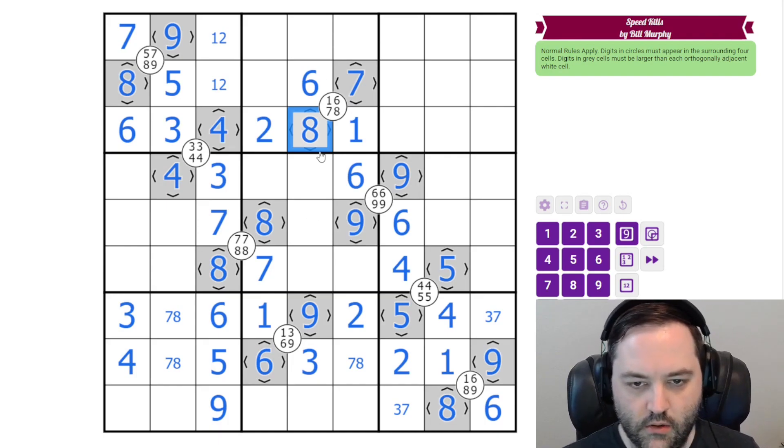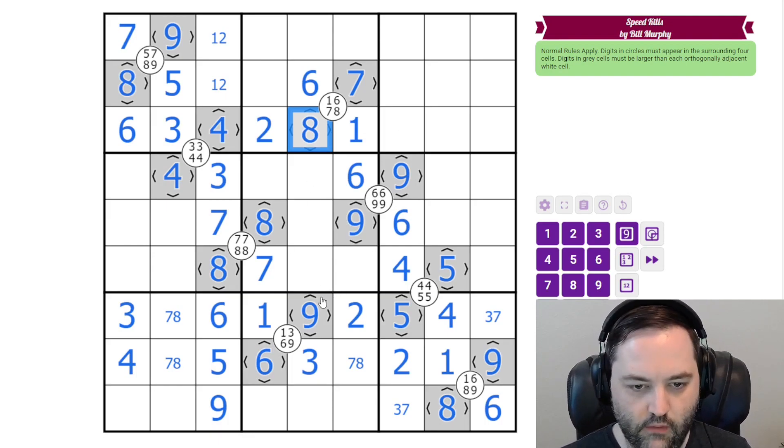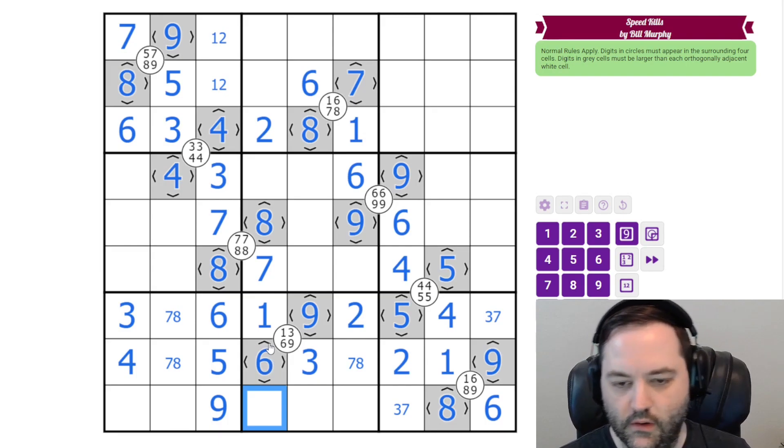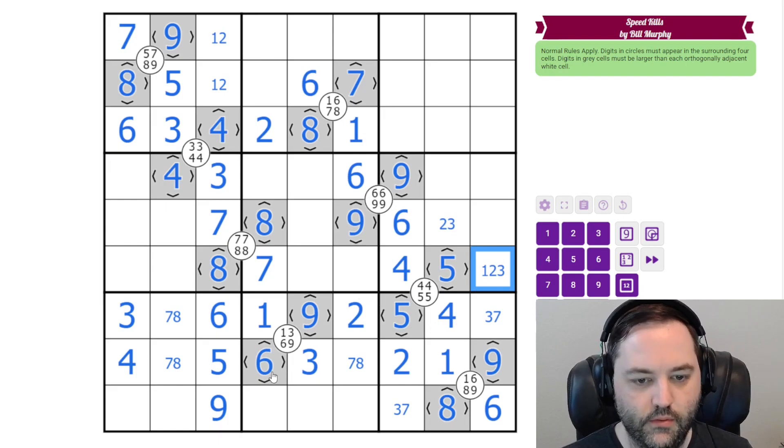So we just have these left, and that 8 that we just placed resolves them. So we've got all the gray cells filled and all the quad clues completed. We're not quite done with the variant because the white cells that are next to gray cells are limited some. So this one has to be less than 5, can't be 1 or 4, so it's 2 or 3. And this one can be 1, 2 or 3.